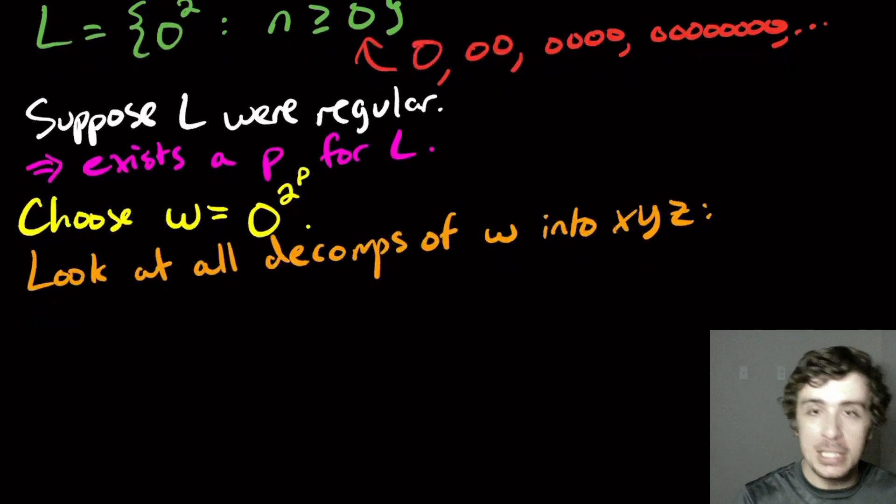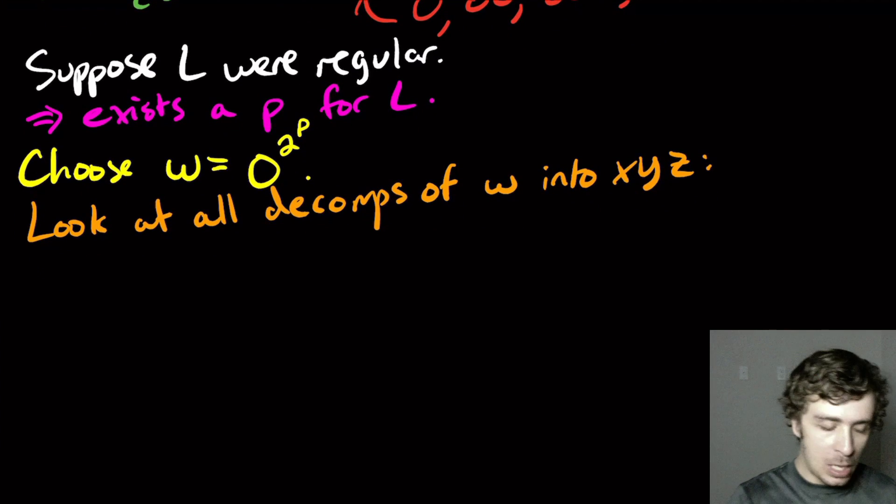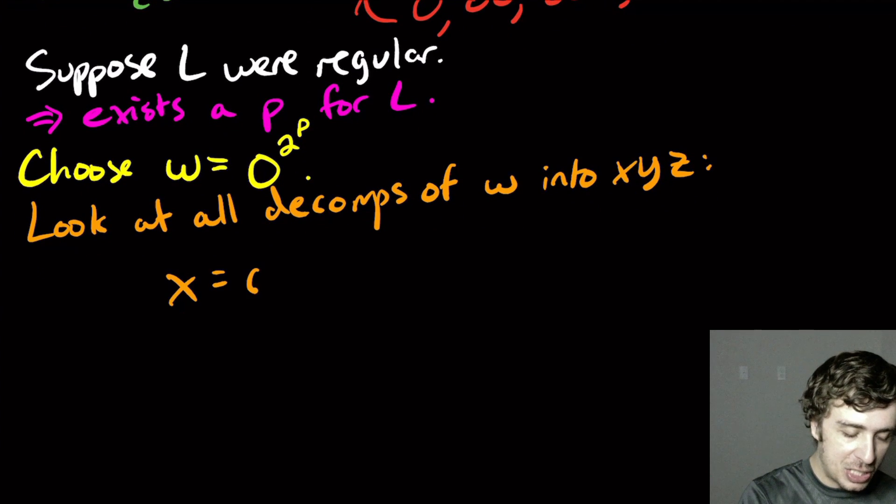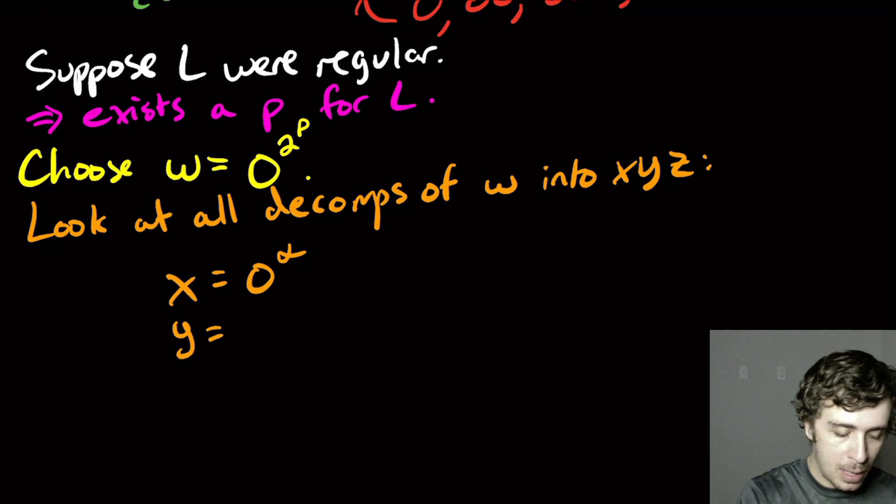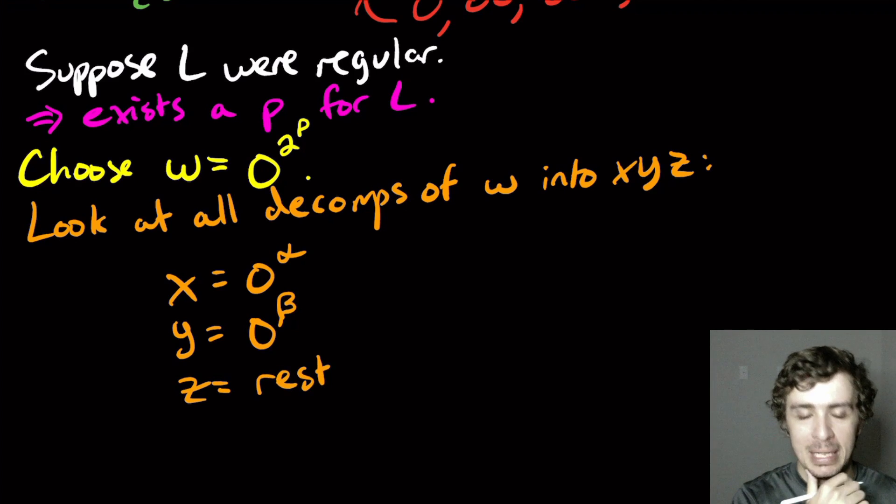So here, since the string is all zeros, we know that X is some zeros. Let's call it alpha, the number of them. Y is some number of zeros. Let's call it beta. And Z is the rest. I'm just going to be lazy and say rest here.